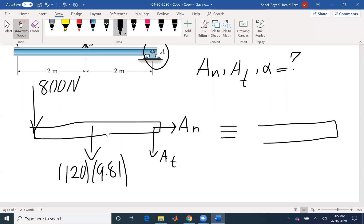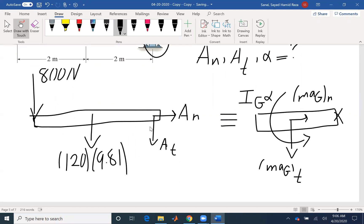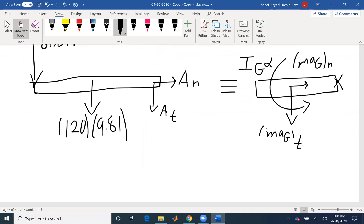I need to draw the kinetic diagram as well. M A_G_N and M A_G_T. Here M A_G_N towards the center of rotation, and the tangential component would be perpendicular to that. And of course, I have I_G alpha. I write to you the form of I_G alpha. But at the end, if you want to find a moment about any other point, that would be okay. This is the free-body diagram and the kinetic diagram.